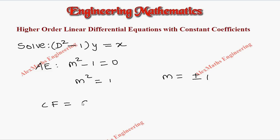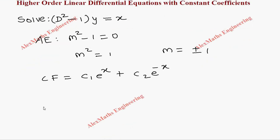The complementary function is c₁e^x + c₂e^(-x). Now coming to the particular integral: x/(D² - 1). As per the procedure, we have to interchange this.